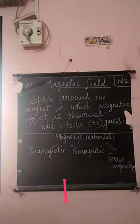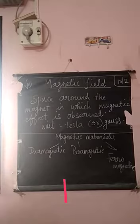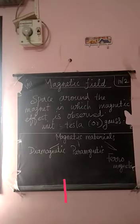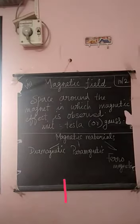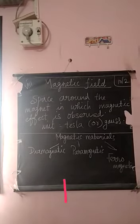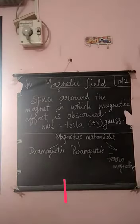The unit of magnetic field is Tesla or Gauss. The unit used to measure the magnetic field is Tesla or Gauss. 1 Tesla is equal to 10,000 Gauss. This is about magnetic field.